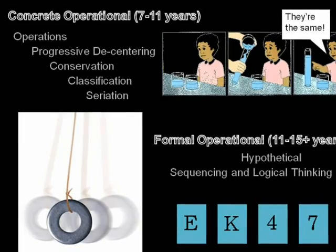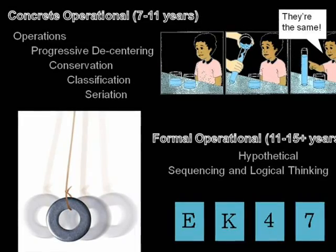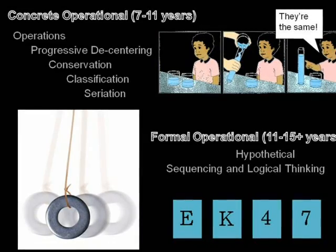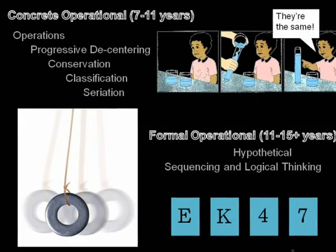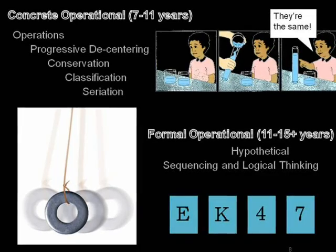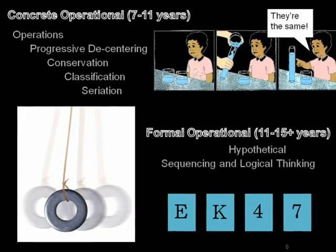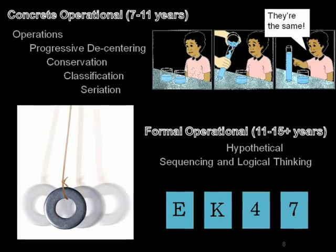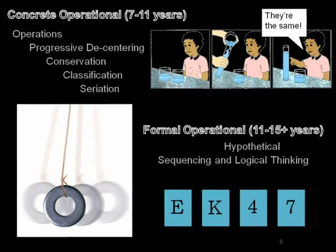People at the formal operational stage are now able to theorize and hypothesize new ideas and easily think abstractly. People at the formal operations level are very logical and can sequence their thoughts. They are now equilibrated between assimilation and accommodation. Take the four digits on screen: if I told you that all cards with vowels on one side have even numbers on the other side, which two cards do I have to flip to prove this rule? Formal thinkers can tell you that you need to flip the E and the 7 — the E must have an even number on the back and the 7 must have a consonant.